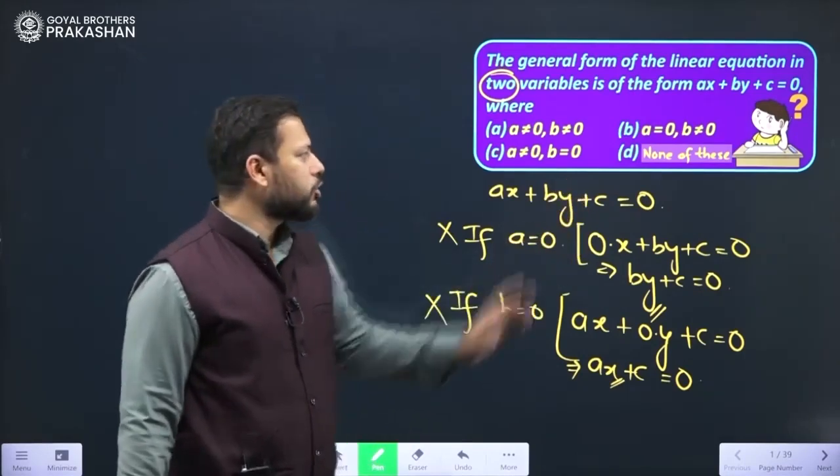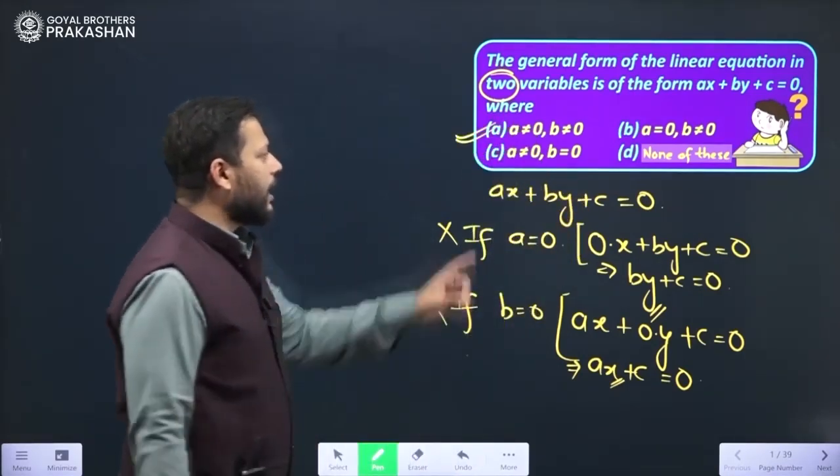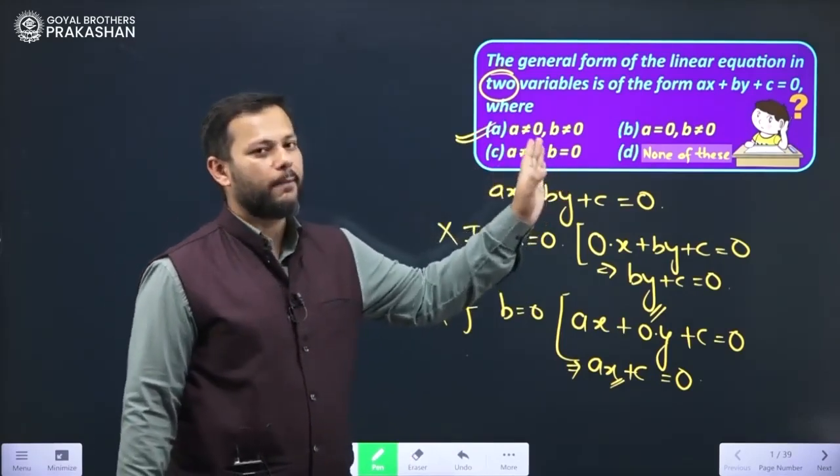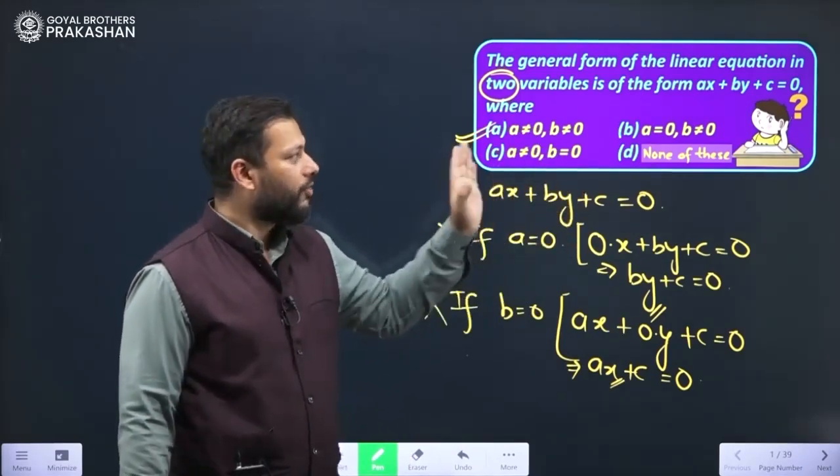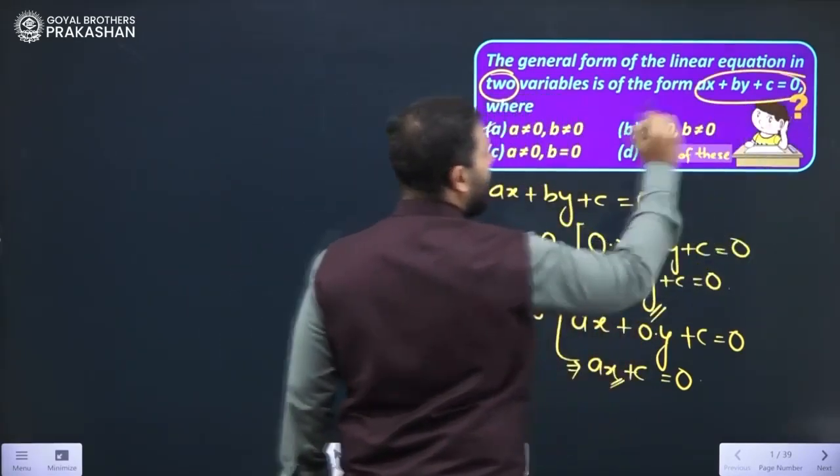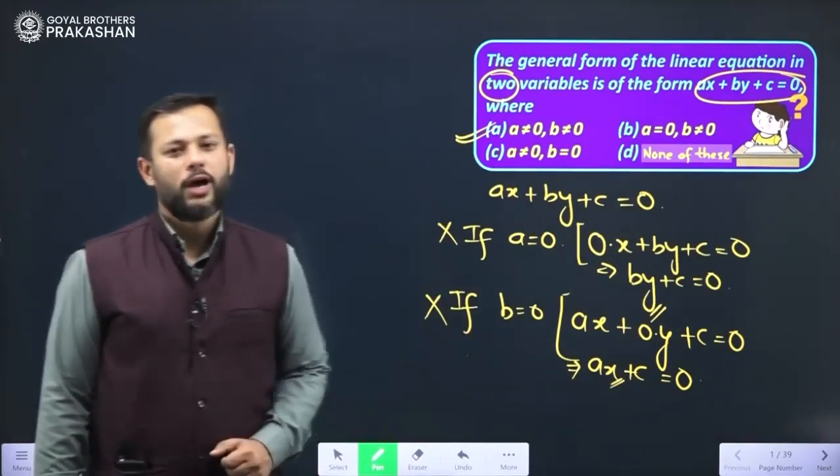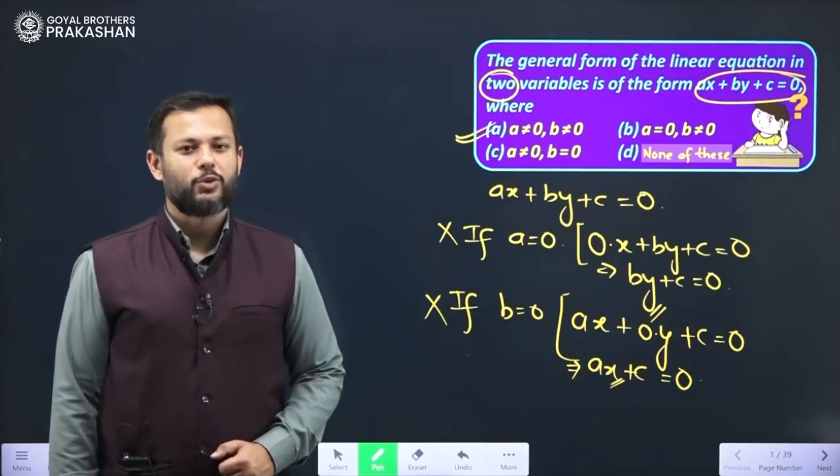And where do we find this option? Option a is suitable for this. A is not equal to 0 and b is not equal to 0. Then only the general form of linear equation in two variables will be justified. That is ax plus by plus c equals to 0. I hope it is clear to all of you. Thank you so much.